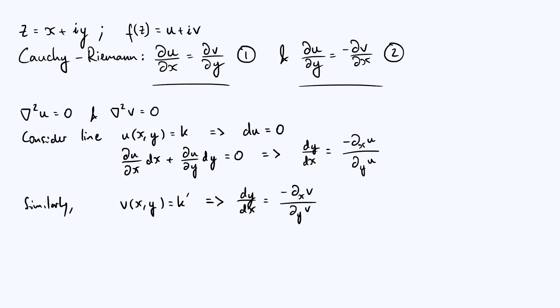Now something interesting happens when we multiply those two gradients that we've just derived together. So the gradient of the v equals constant curve was minus ∂ₓv by ∂ᵧv, and the gradient of the u equals constant curve was minus ∂ₓu by ∂ᵧu. Now what's that equal to? Well, we can use the Cauchy-Riemann equations, one and two at the top screen to make some simplifications. In particular, note that from equation two, minus ∂ₓv is the same as ∂ᵧu. So those two circled terms in that equation at the bottom there cancel out and just give one.